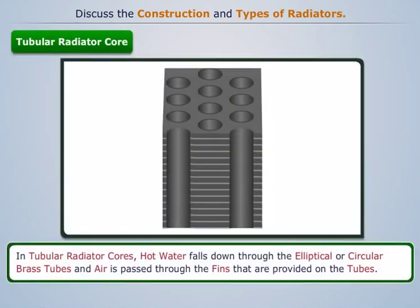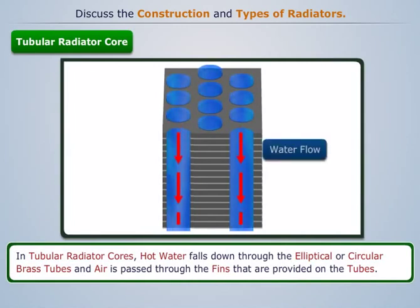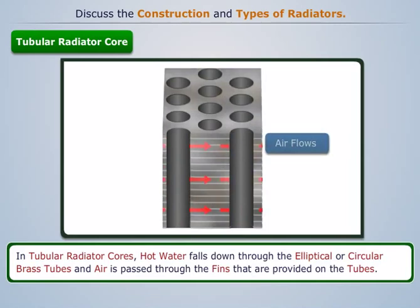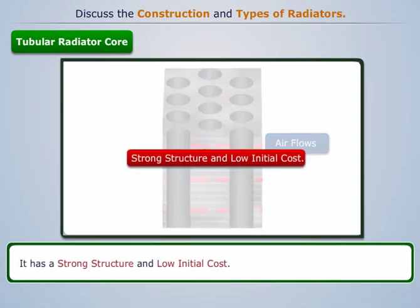In tubular radiator cores, hot water falls down through the elliptical or circular brass tubes, and air is passed through the fins that are provided on the tubes. It has a strong structure and low initial cost.